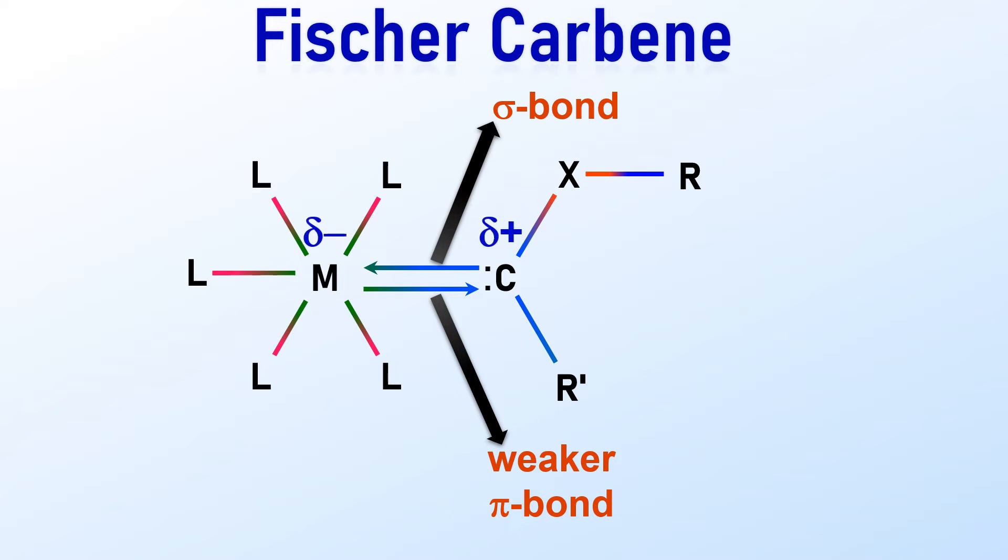As a result, the metal gets partial negative charge while the carbene carbon gets partial positive charge.